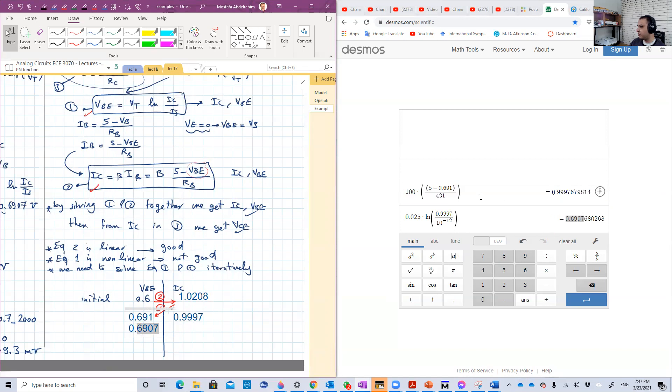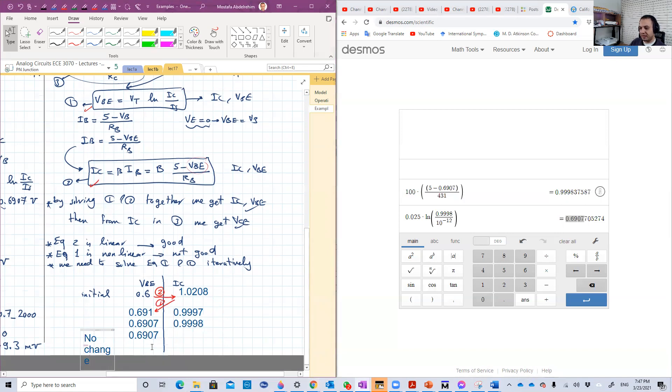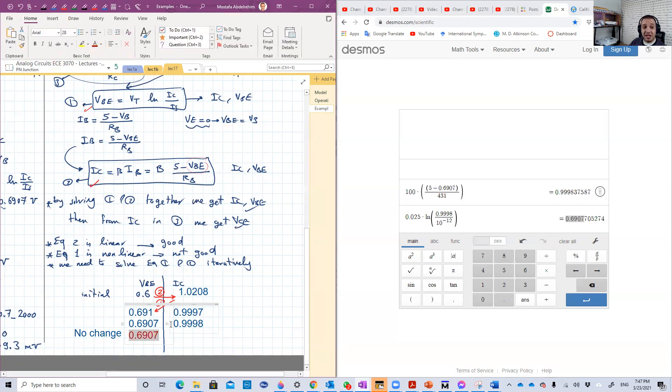Then we take this 0.9998. Basically, we just want to change here. Yes, we have reached the same number. Look, 0.6907, no change. There is no change here. Let's write that, no change, no change. So we should stop. And this will be our final value for VBE, and this will be our final value for IC.